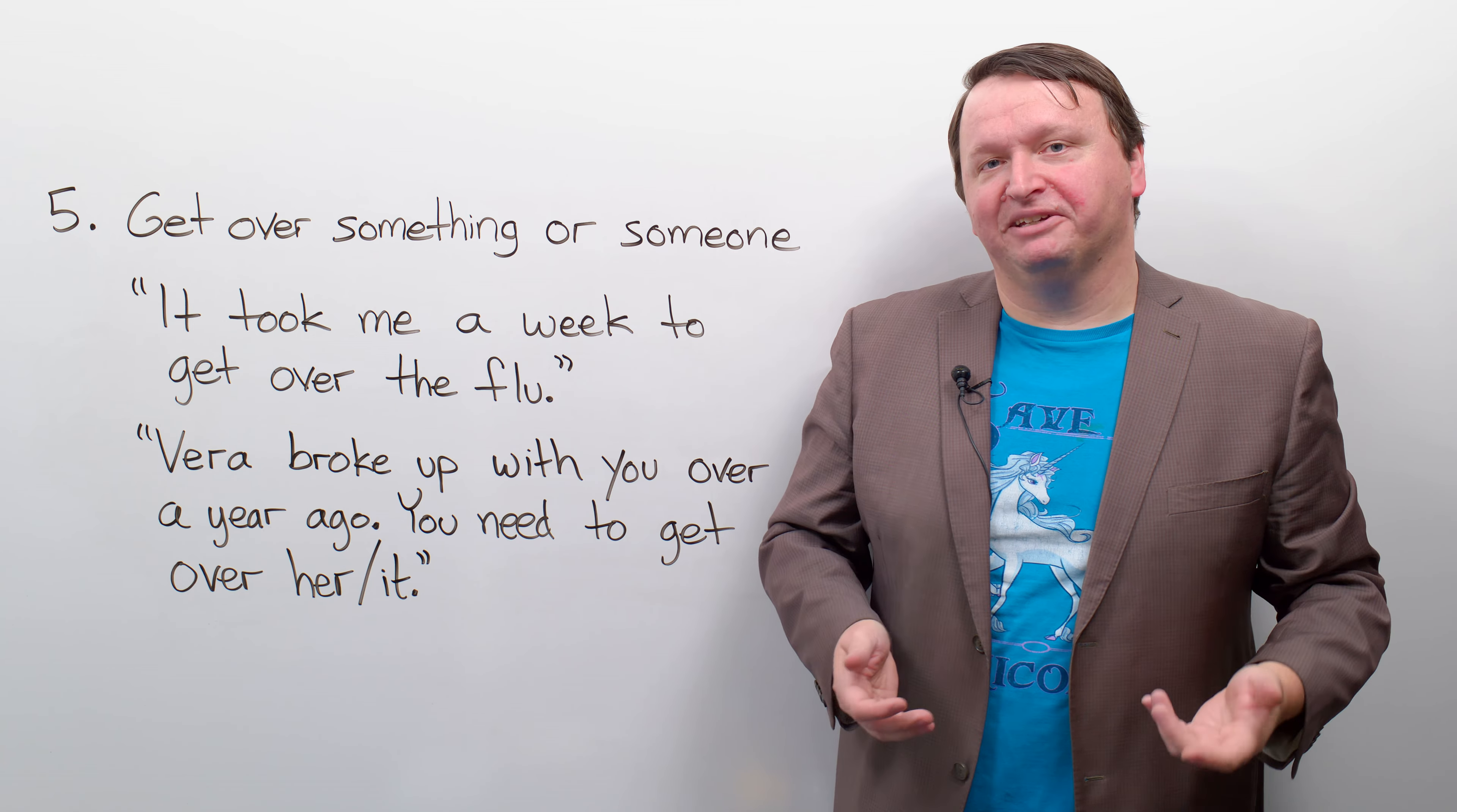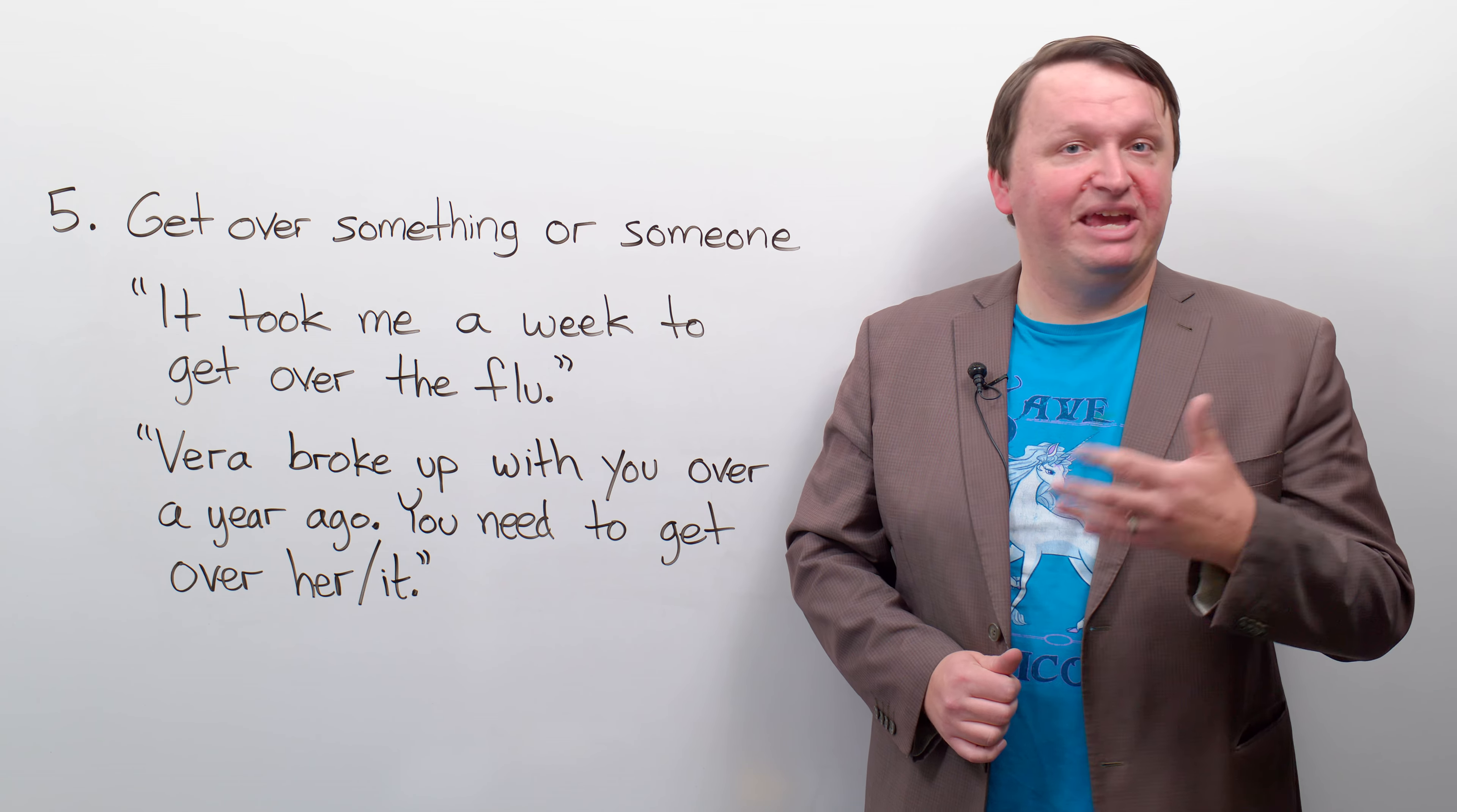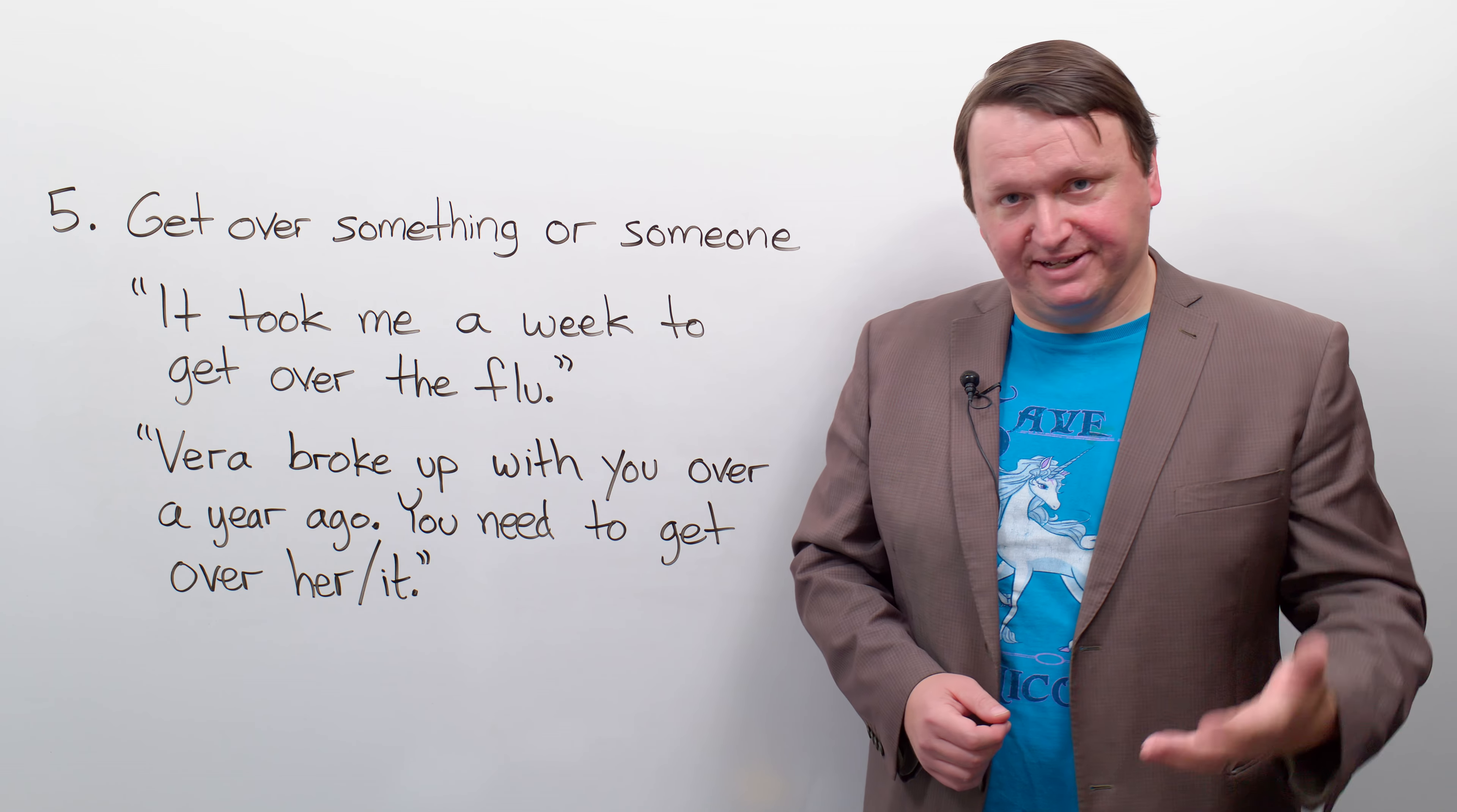Vera. Vera is back. We disappointed Vera. We broke up the dinner plans, right? Vera broke up with you over a year ago. She probably broke up with you because she got bent out of shape when you canceled the dinner plans. But she broke up with you over a year ago. You need to get over her. Or, you need to get over it.